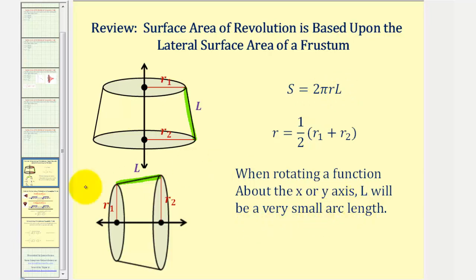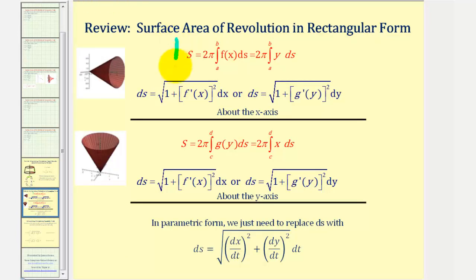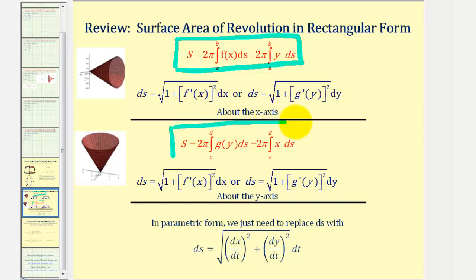We've actually already done this before using rectangular coordinates. You might recognize these formulas when rotating about the x-axis using rectangular coordinates, and these two formulas when rotating about the y-axis. You should be able to recognize the formula for the lateral surface area of a frustum here — two pi r l — where y is the vertical distance representing the radius.